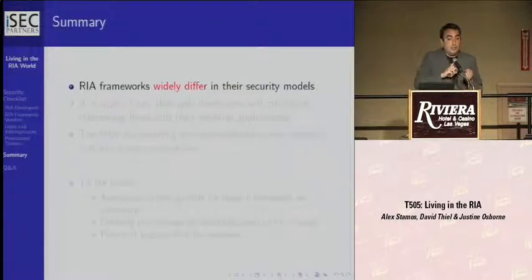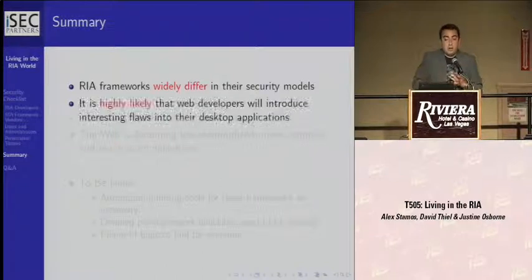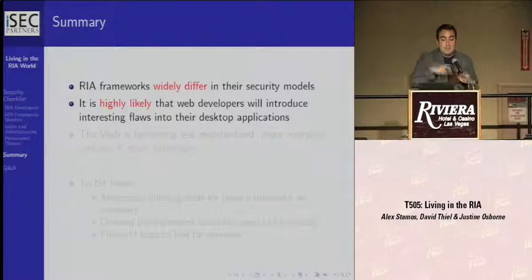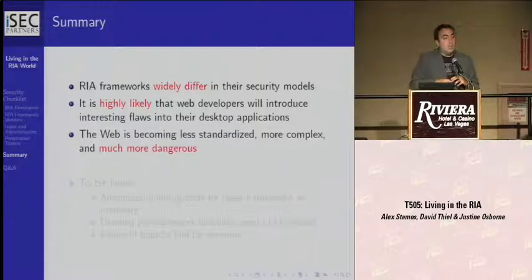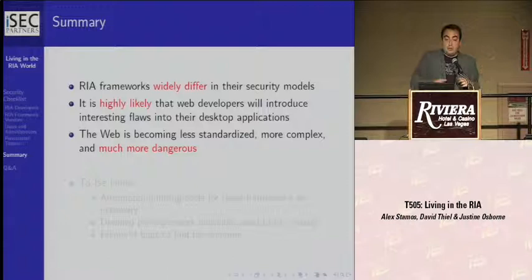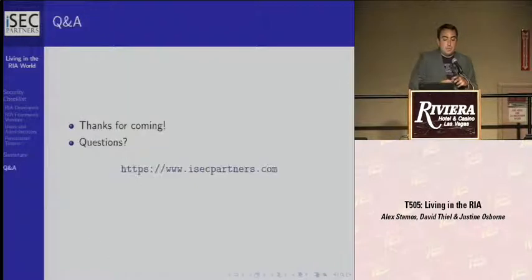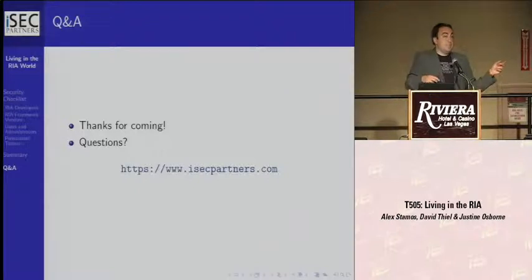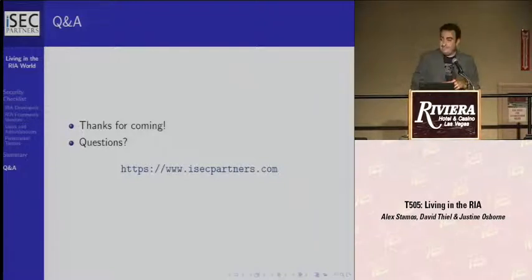In conclusion, these RIA frameworks are very widely different in what they can do and their security models. It is extremely likely that using these RIA frameworks, web developers are going to introduce all kinds of new, very interesting flaws in web applications as well as things that are supposed to be desktop applications. The web is becoming less standardized — this is all about corporate control of which company is going to control the API inside the browser. Breaking standardization is what you have to do if you want to monopolize the browser, and from that perspective it's making security a lot harder and things a lot more dangerous. We'll step off the stage if you want to ask questions, and we'll be in room 115 for a breakout session.